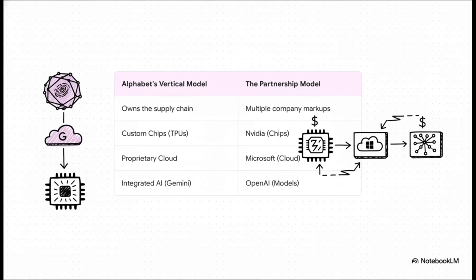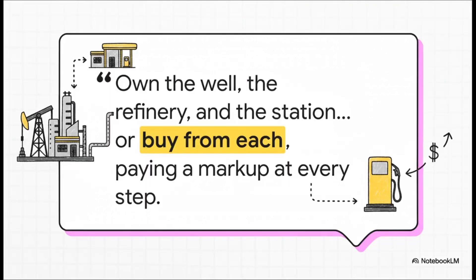And at every single one of those steps, someone's adding a markup. The source uses a perfect analogy for this, the gasoline supply chain. Alphabet is like the company that owns the oil well, the refinery, and the gas station. It controls the costs at every single stage.